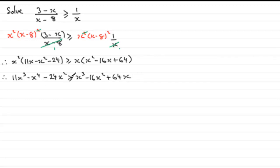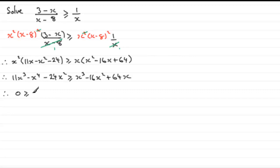Now we rearrange so that we get 0 on one side. Since we have a negative x to the 4 on the left, I subtract 11x cubed, add x to the power of 4, and add 24x squared to both sides. This gives us 0 is greater than or equal to x to the power of 4 minus 10x cubed plus 8x squared plus 64x.